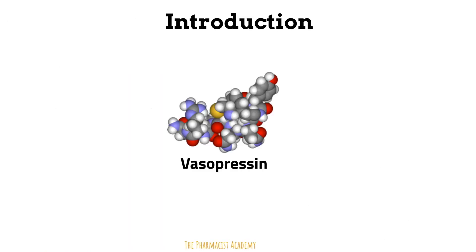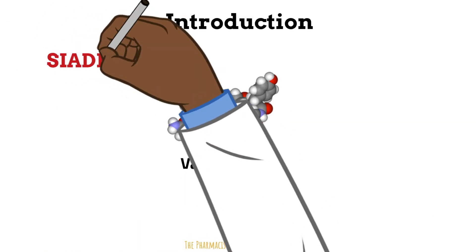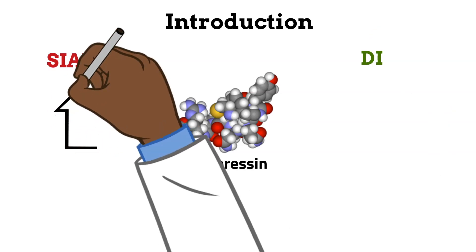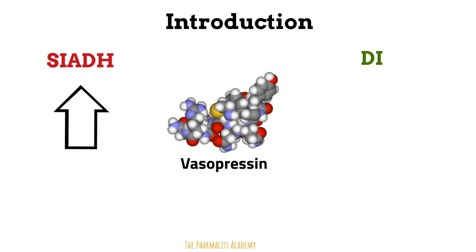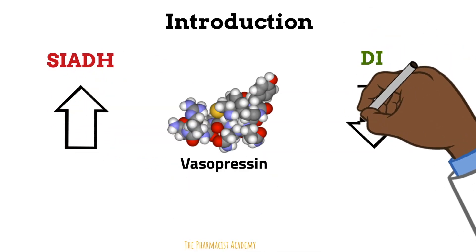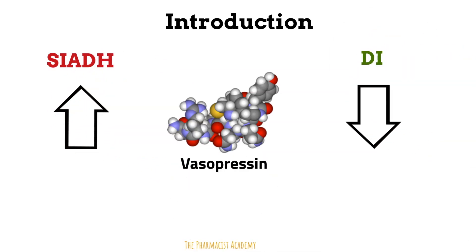So with that being said, in SIADH you have an increase in the amount of vasopressin, and then in diabetes insipidus there's going to be a decrease in the amount of vasopressin. So based off this, we kind of have an idea of how these patients will present.